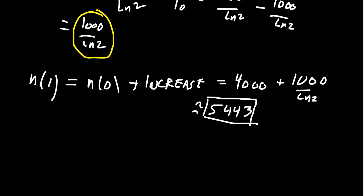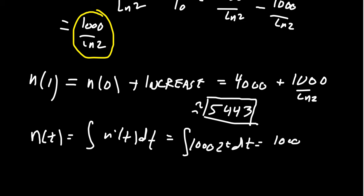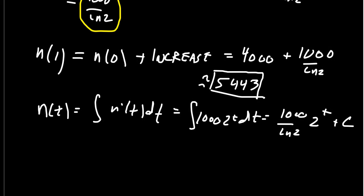Notice what we saw before is that our population n of t equals the integral of n prime of t dt. If we know the anti-derivative, we can calculate it. So in this situation, if we're integrating 1000 times 2 to the t dt, we end up with 1000 over the natural log of 2 times 2 to the t plus a constant.